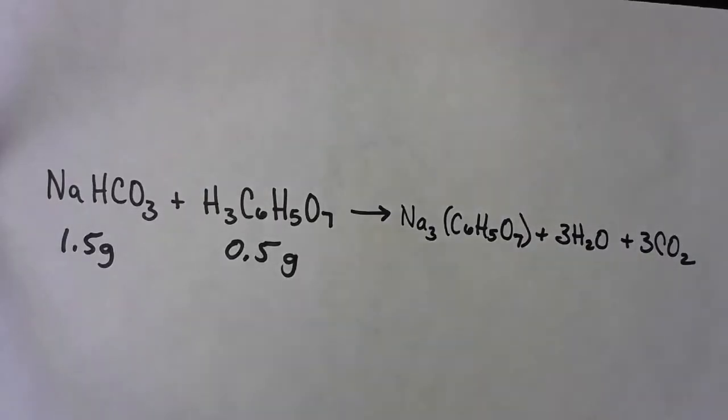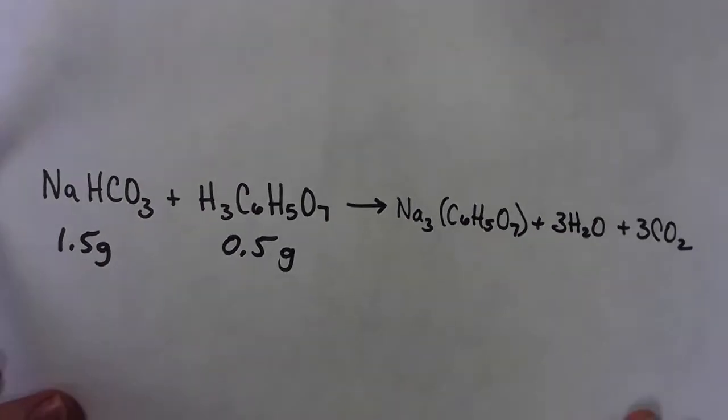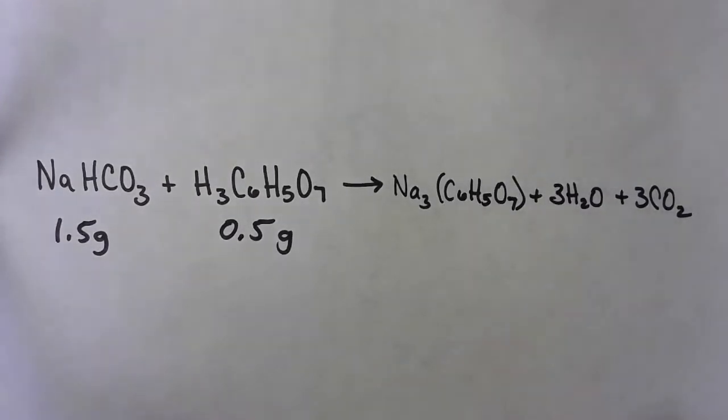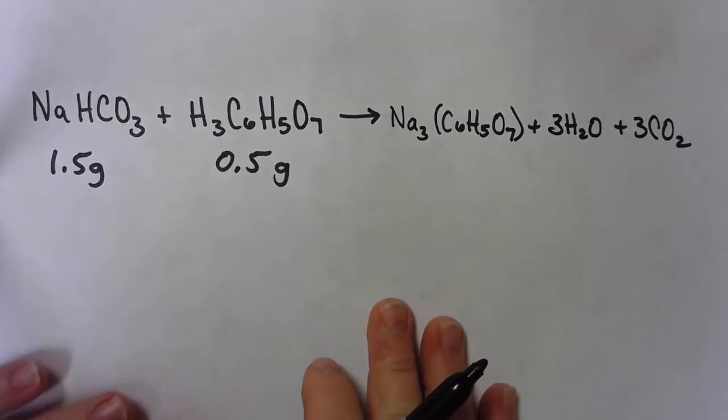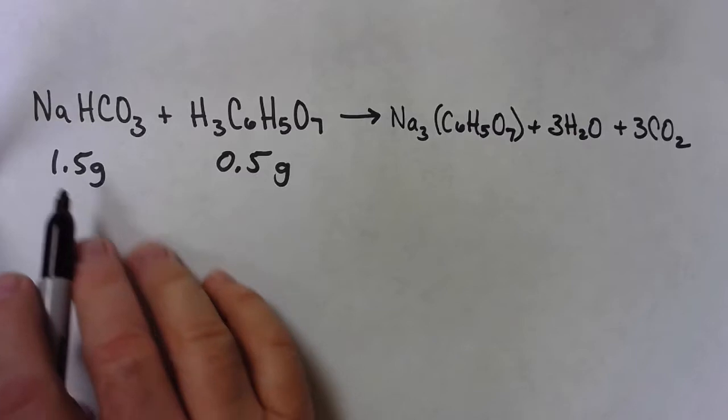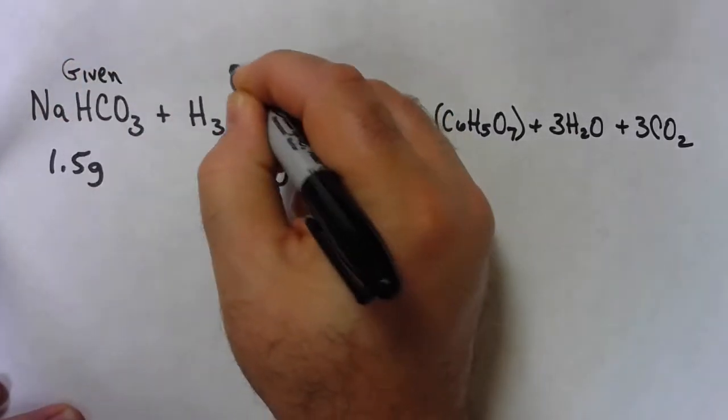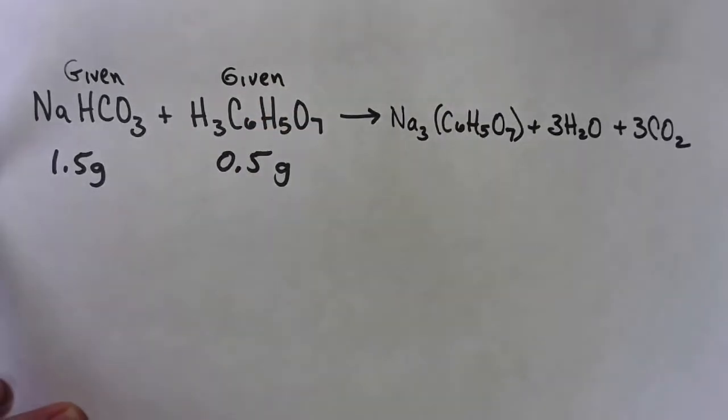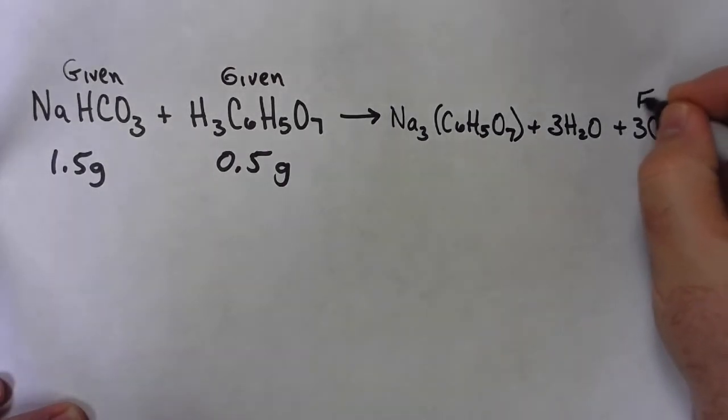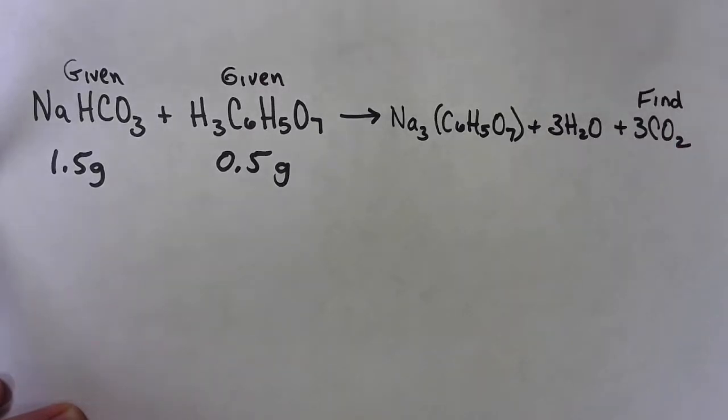The equation that we've been using all along, since we did that first demo video with the citric acid and the baking soda, I put in 1.5 grams of the baking soda and 0.5 grams of the citric acid. And what we need to do, following those steps from stoichiometry, since I've got two givens, I'm going to have to do two problems with them.